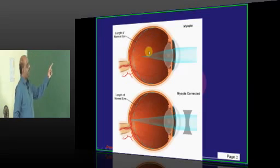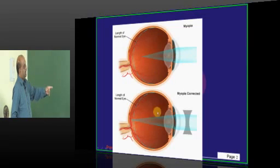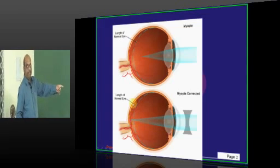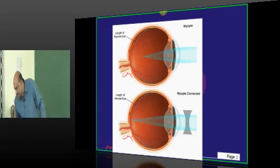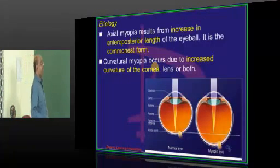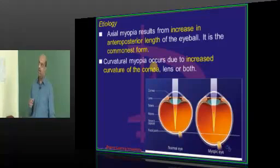In the normal eye, light rays fall on the retina. In the corrected myopic eye, it is equal to normal — light rays fall on the retina. Whereas in myopia, the light rays fall in front of the retina, which is the underlying problem. Now what is the etiology of myopia?